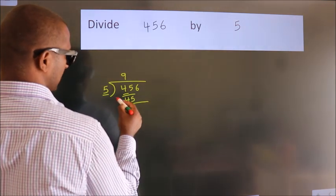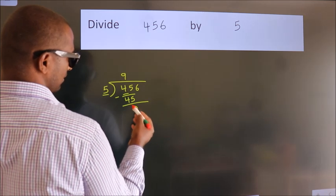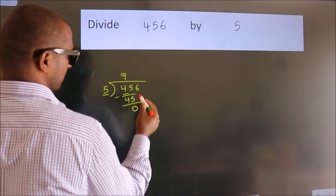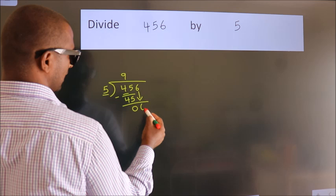Now, we should subtract. We get 0. After this, bring down the beside number. So, 6 down.